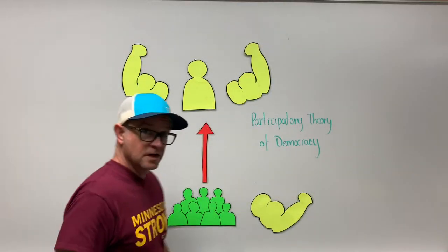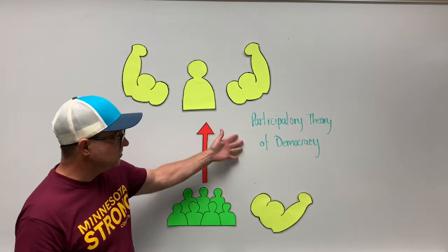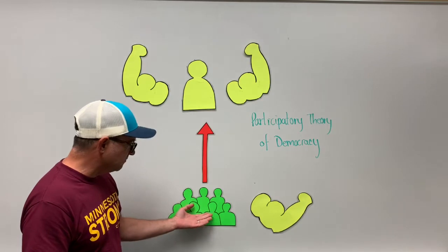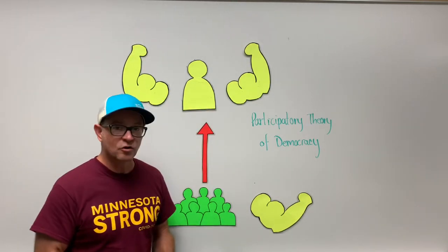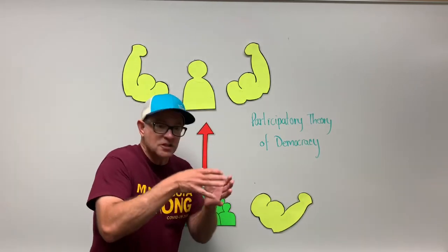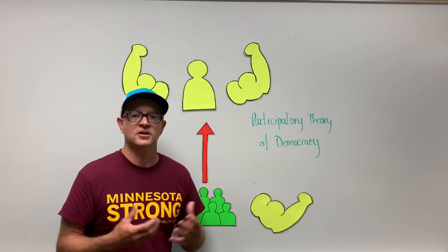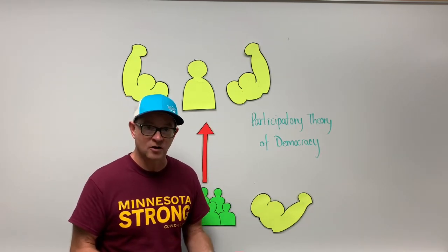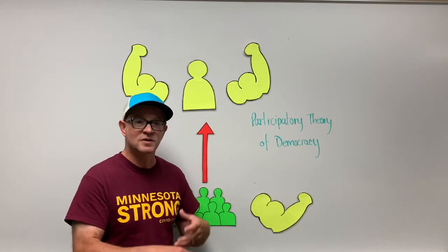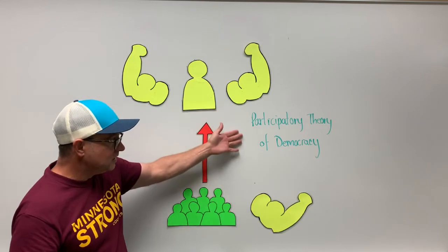There's a final theory of democracy you need to know: the participatory theory of democracy. Adherents to this theory suggest that you need to participate in all walks of life. You're not just going to vote or run for office — you're going to write letters, work for campaigns. But it's more than just changing the manner in which you participate; it's about all walks of life. You're going to participate in national politics, but also in state and local politics — whether it's county politics or school board politics.